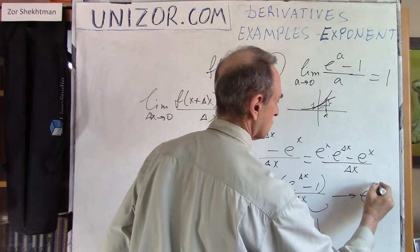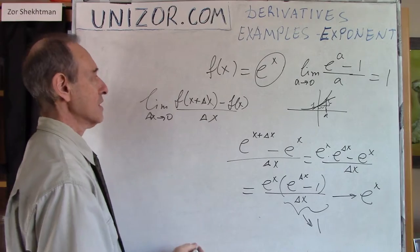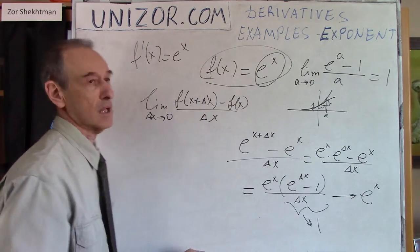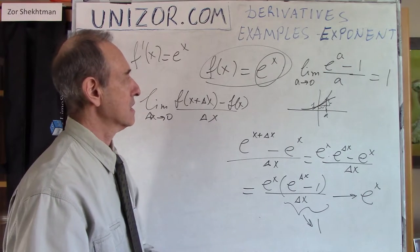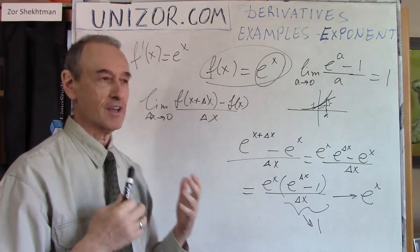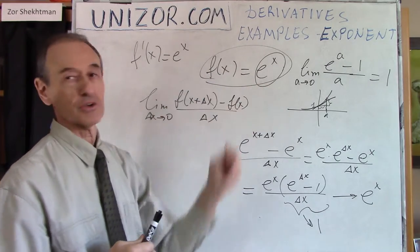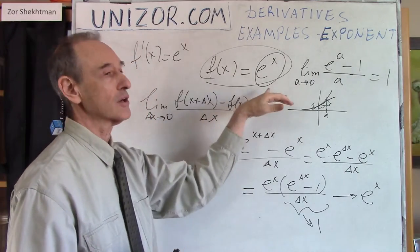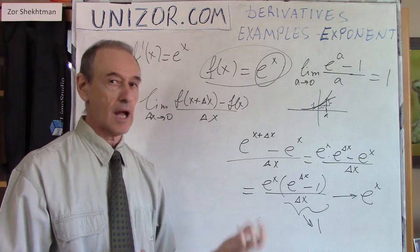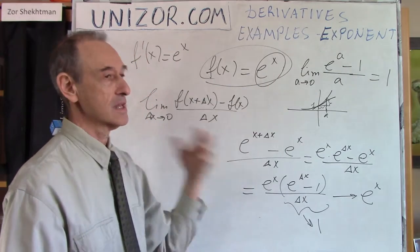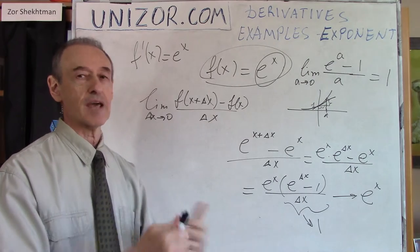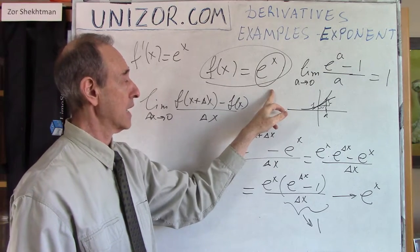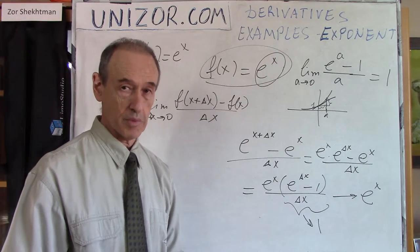The whole expression tends to e to the power of x. Here is the wonderful thing: for this particular function, its derivative is itself. e to the power of x is the only function which has this property — its derivative is equal to itself. It's a very interesting property. That's why e is such an important number in calculus and mathematics in general, because e to the power of x is the only function that has the property of being the same as its own derivative. This function is defined for all real x, and obviously its derivative also has the same domain — all real numbers.